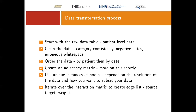Once we've ordered our data, we can create something called an adjacency matrix. This is the core of any description of a network — a network can be described using an adjacency matrix. We'll be using unique instances of services as our nodes.